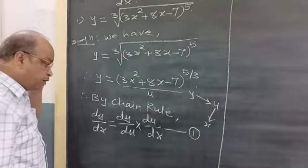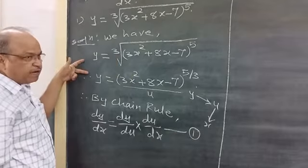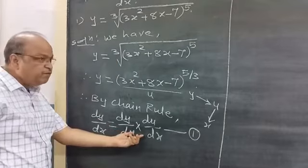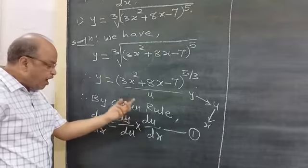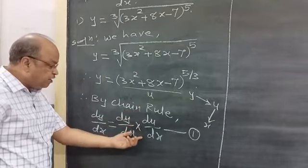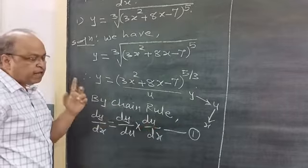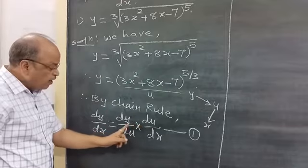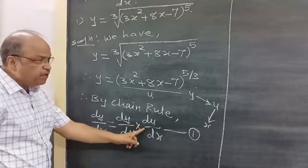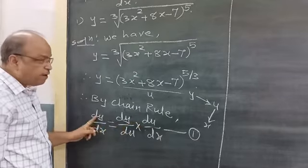The formulaic part is done. This is the given part. Now we find both derivatives and put these values into the equation. We find the product of both to get dy by dx.